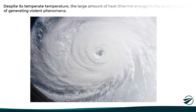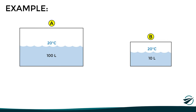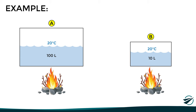Having all this clear, let's look at the following example. Here we have two containers with different amounts of water but at the same temperature. We expose both containers to an external heat source. After 5 minutes, the temperature of the water in both cases will have increased. However, in container B the temperature increased by 20 degrees, which is a lot, while in container A it only increased a couple of degrees. This happened because in container A, the incoming heat had to be distributed over 100 liters of water, which increases the average kinetic energy very little, while in container B, the same heat was distributed over only 10 liters, which increased the average kinetic energy a lot.